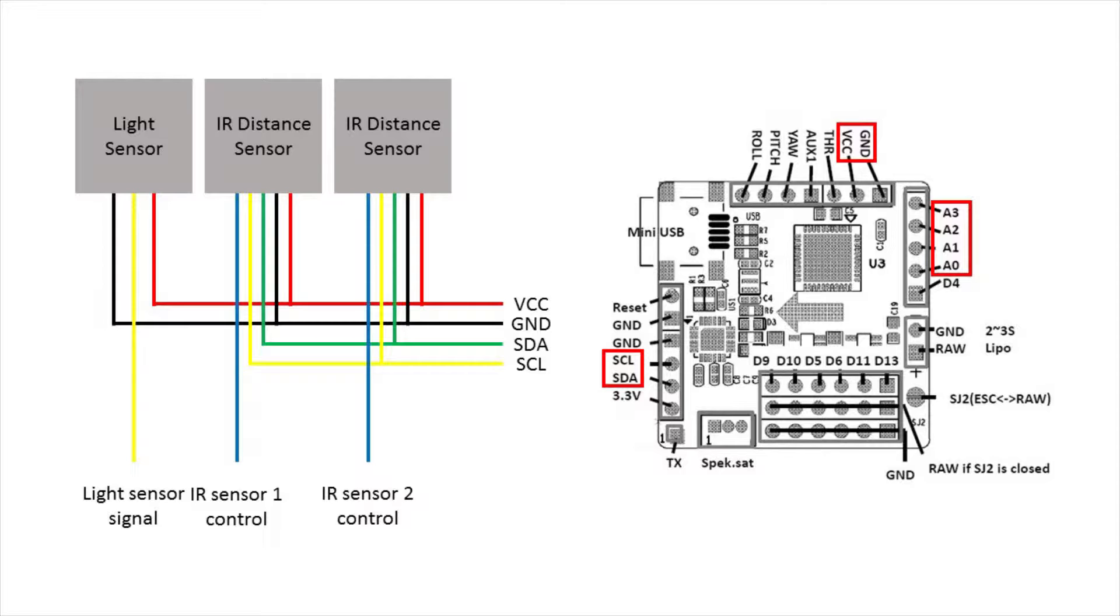Many of the wires of the different sensors can be connected together and put on the same pins of the microcontroller. For example, power red and GND black. However, each sensor has a wire that should be connected to its own pin.